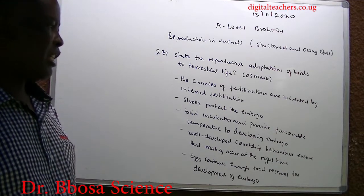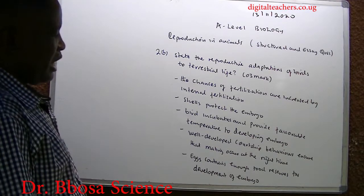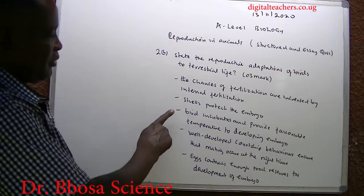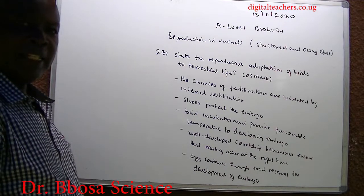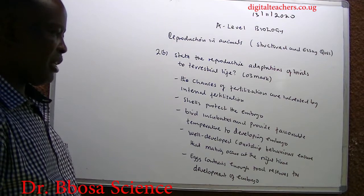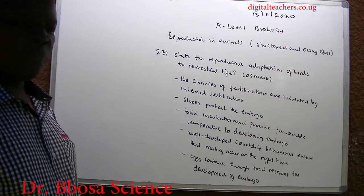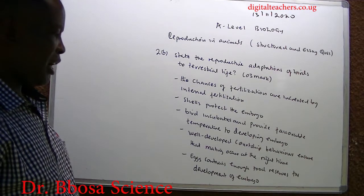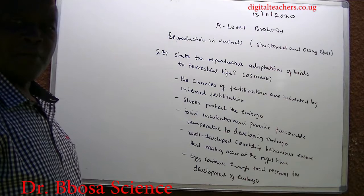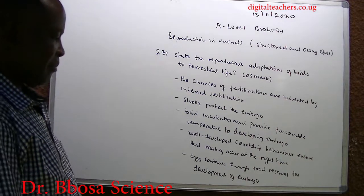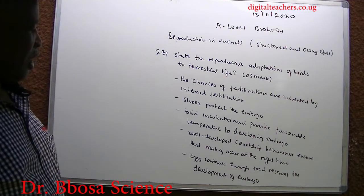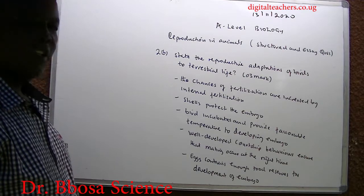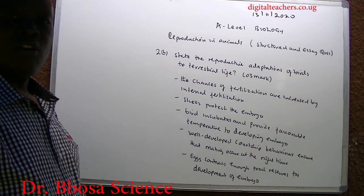Chances of survival are increased by internal fertilization. Two: shells protect the embryo. Three: birds incubate and provide favorable temperature to the developing embryo. Four: well-developed courtship behavior ensures that mating occurs at the right time. Five: eggs contain enough food reserves for development of the embryo.